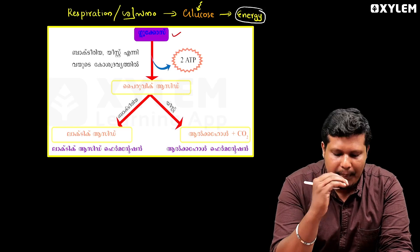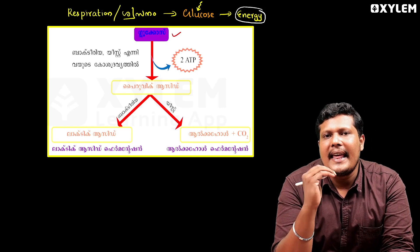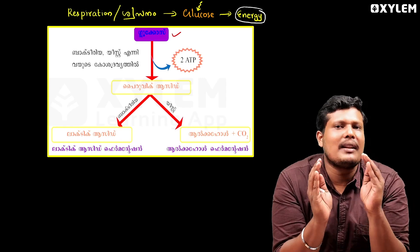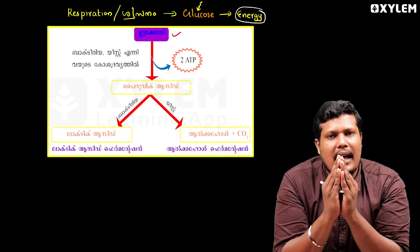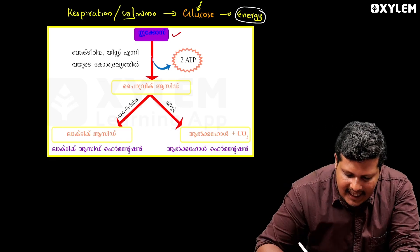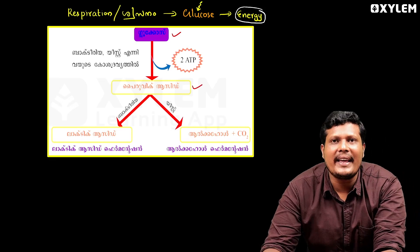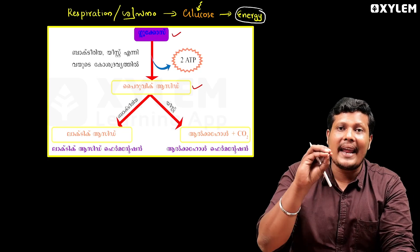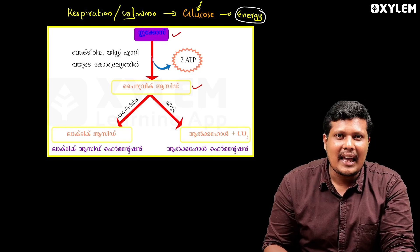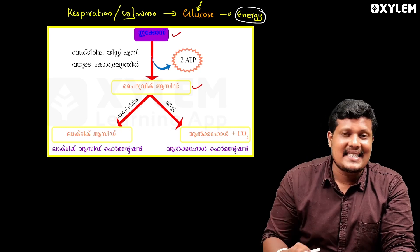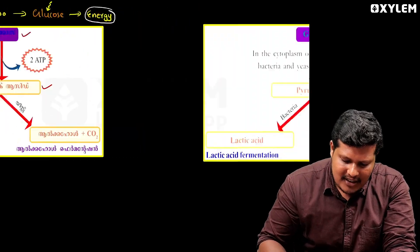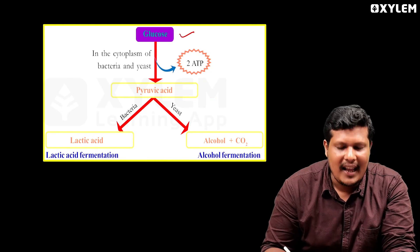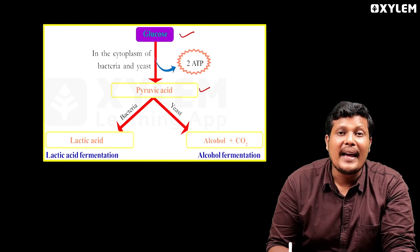We will break down the process of glycolysis. What is glycolysis? Glycolysis is the breakdown process. What is pyruvic acid? If we are using glycolysis, we will break down the process to produce pyruvic acid.